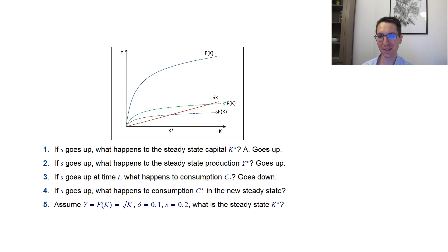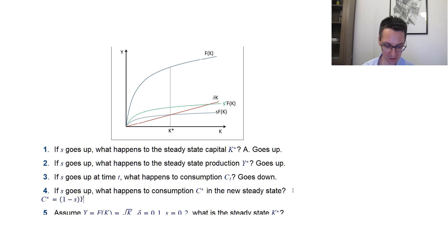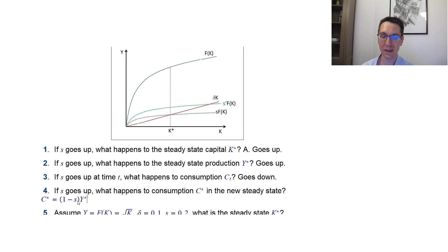Question four — now things are getting more interesting. If S goes up, what happens to consumption C* in the new steady state? Why is this more difficult? Well, consumption in the steady state is C* = (1 − S) × Y*. If S goes up, then (1 − S) goes down, so if I invest more I have less to consume. But we also said that in the steady state Y* would go up, because investing more ultimately accumulates more capital and more production.